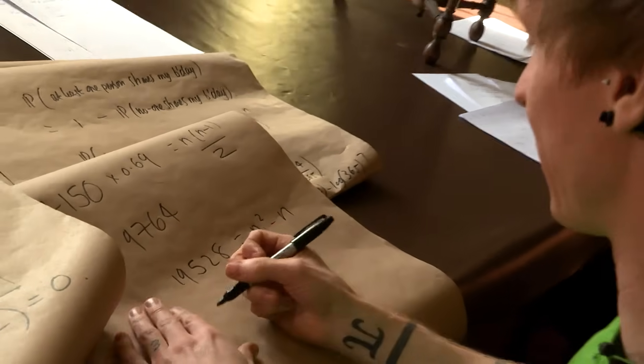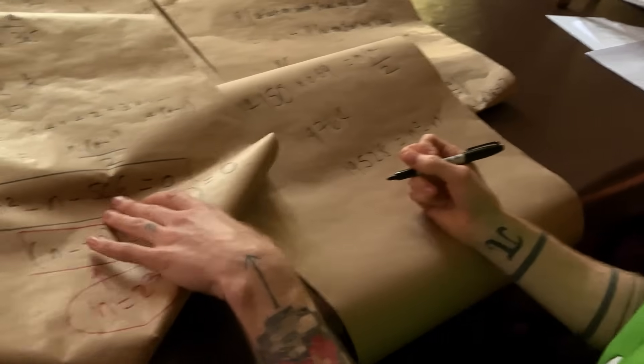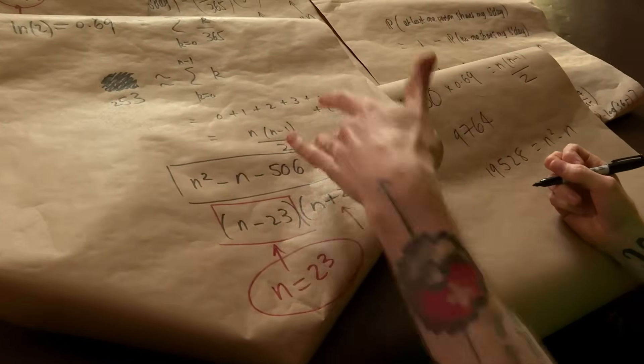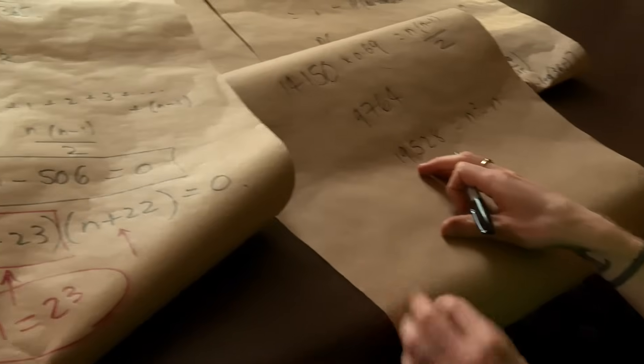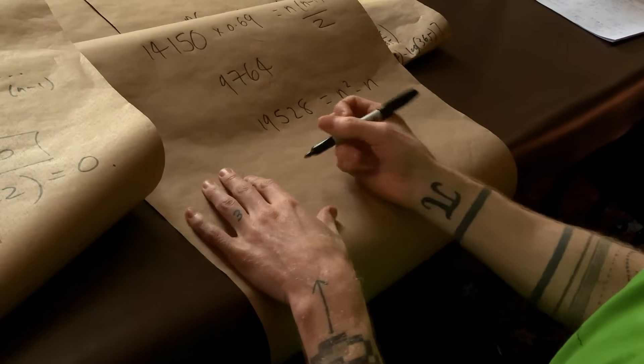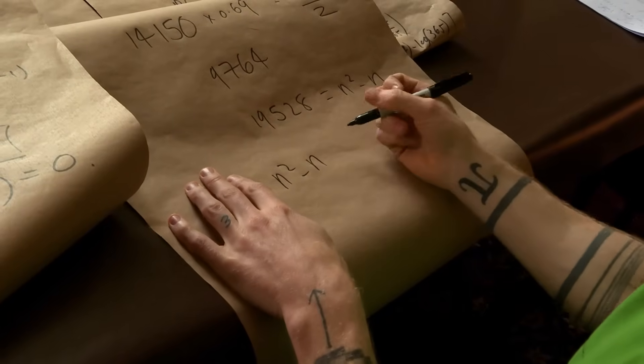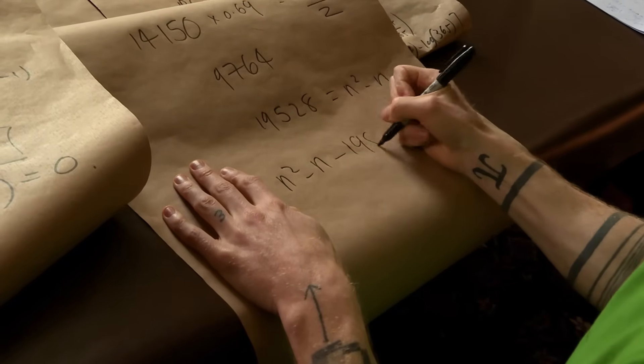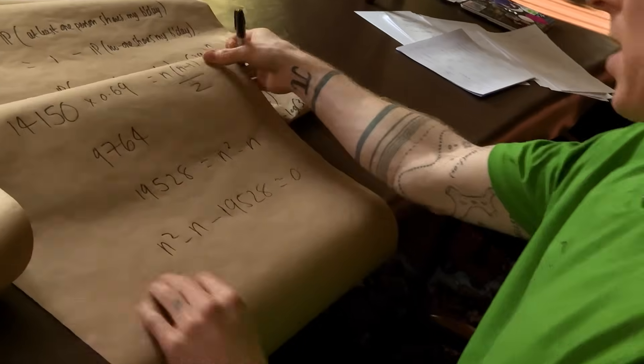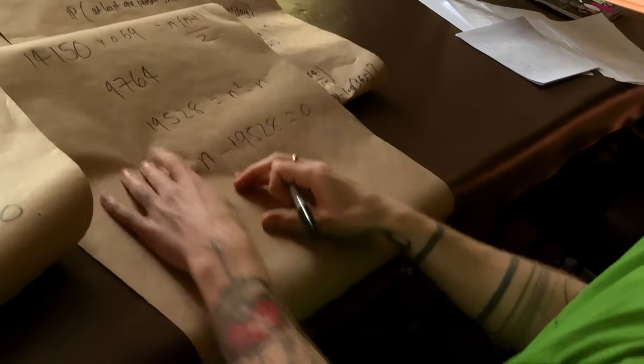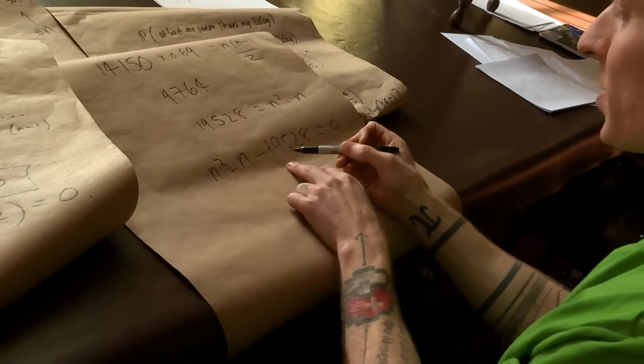Before we had the 506, that was the key number for earth, but now because we have way more choices on Pluto, we have to solve n squared minus n minus 19,528. So what we need is two numbers that multiply together to give us this that are one apart.